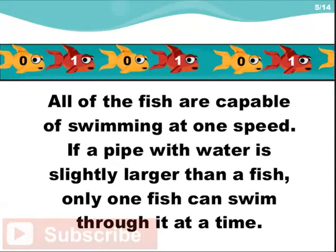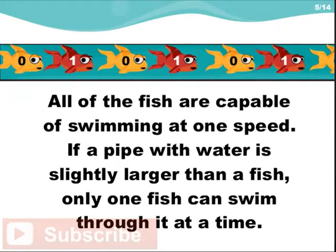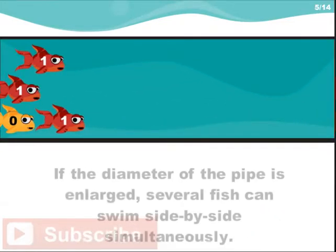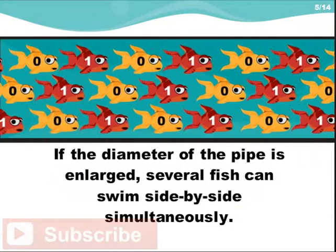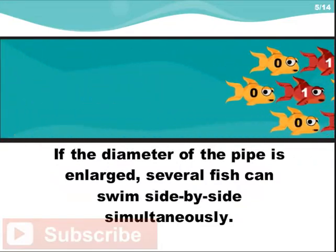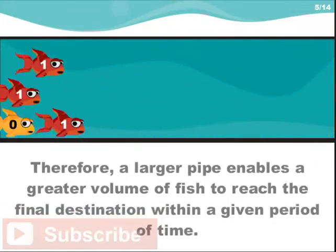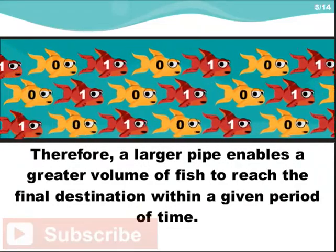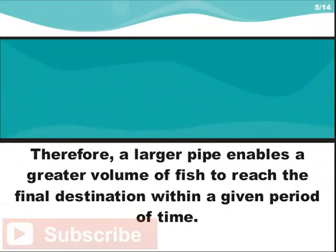If a pipe with water is slightly larger than a fish, only one fish can swim through it at a time. If the diameter of the pipe is enlarged, several fish can swim side by side simultaneously. Therefore, a larger pipe enables a greater volume of fish to reach the final destination within a given period of time.